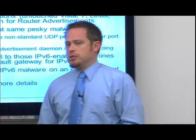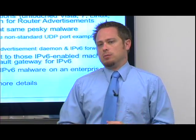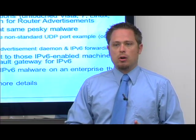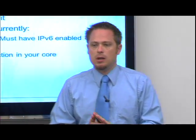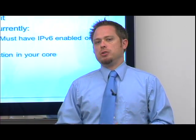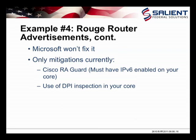Read up on RFC 6104, which includes details from the IETF about the rogue RA problem and using RA Guard. One problem is that Microsoft doesn't consider it an issue, since it's a key part of the protocol. Your main mitigations are to use Cisco RA Guard on your enterprise network — which does require enabling IPv6 on the network — or to use deep packet inspection engines like Assure 6, which will protect against many of the scenarios we've discussed.